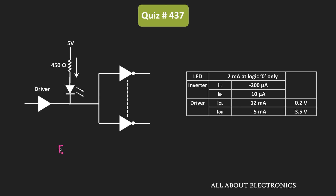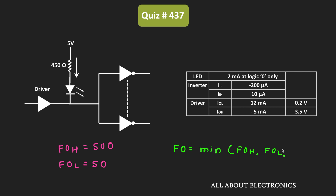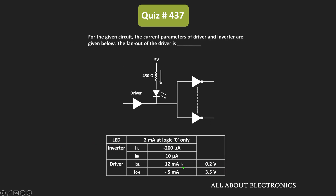That means the high-state fanout is equal to 500, while the low-state fanout is equal to 50. And if we see the overall value of the fanout, then that is the minimum of these two values — that means the minimum of the high-state fanout and the low-state fanout. That means the overall value of the fanout for the given driver is equal to 50. And therefore, we can say that for the given circuit, the fanout of the driver is equal to 50.